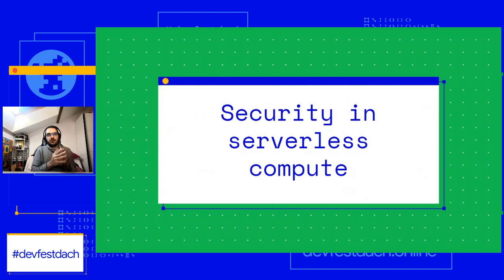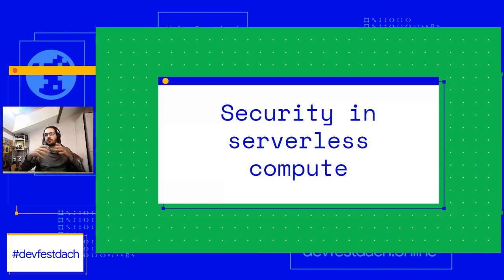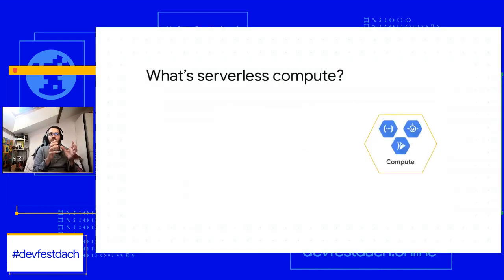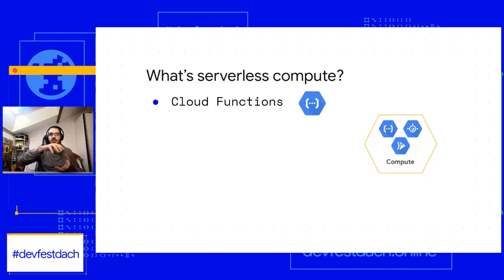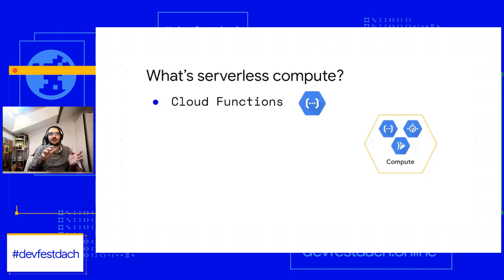When talking about security in serverless compute on Google Cloud, there are three main products. Cloud Function is a very simple service: you write a function, a small piece of code, and ship it to the cloud. Google Cloud compiles it, packages it, and deploys it somewhere on servers — it's serverless, so I don't know where the servers are.